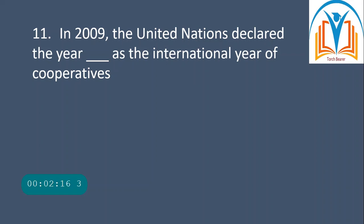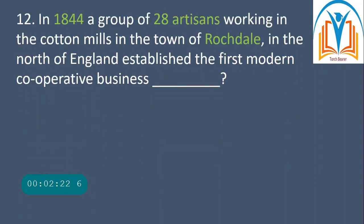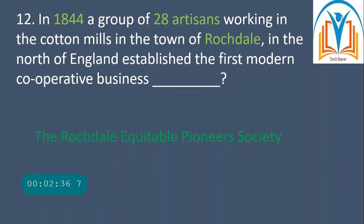Next question: in 2009 the United Nations declared a year as the International Year of Cooperatives — that year was 2012. Next question: in 1844, a group of 28 artisans working in the cotton mills in the town of Rochdale in the north of England established the first modern cooperative business.